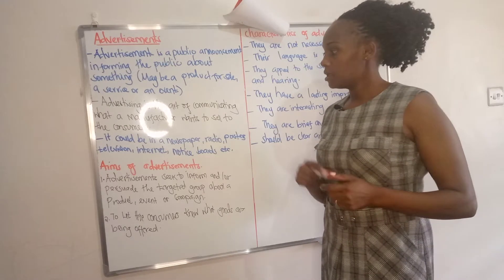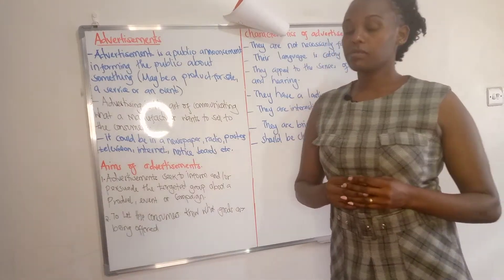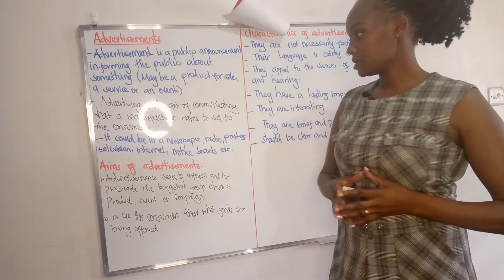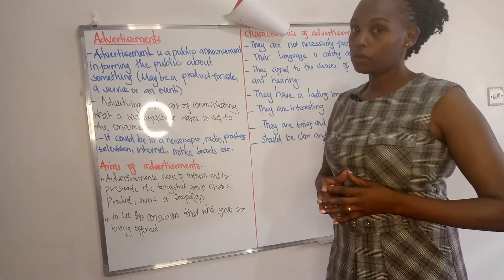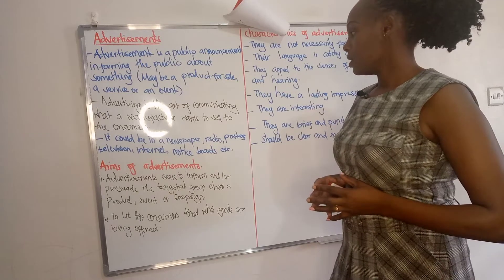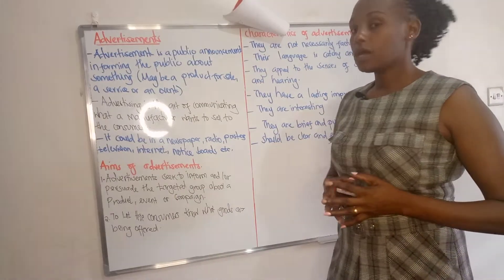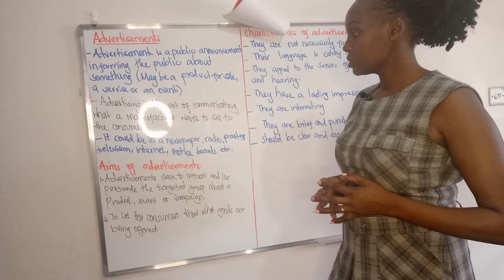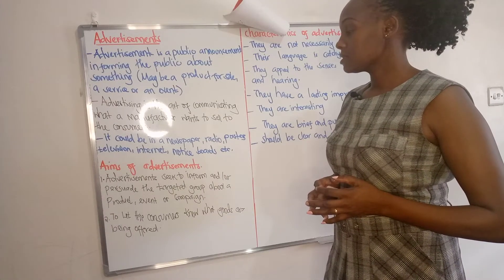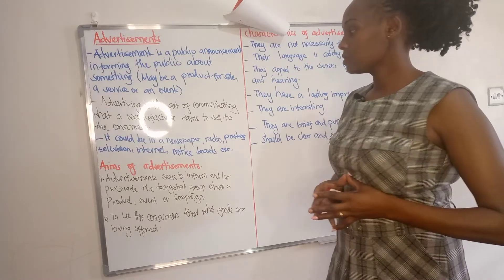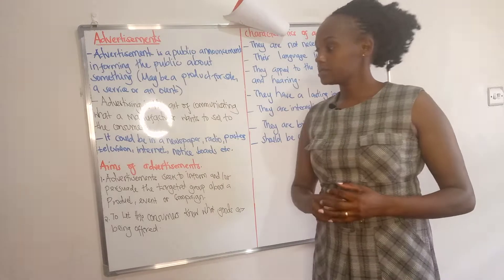Notice what it is saying. When we have advertisements in newspapers, it means we only have the visual part. When we have them on radio, we only have the audio part. In posters, we have the visual part. In television, we have both audio and visual. While on the internet, it is the same as television — both audio and visual. And on a notice, we have the visual part only.